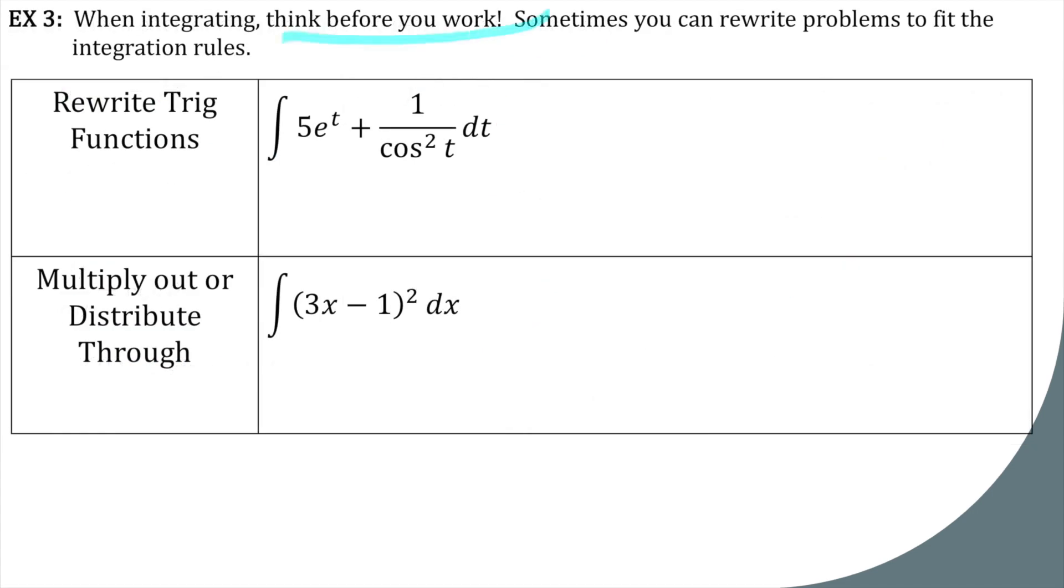When integrating, think before you work. Sometimes you can rewrite problems to fit the integration rules. So for example, this first one, what is 1 over cosine squared t? Well, that's secant squared. Now I can take the antiderivative of secant squared. Can you think of a function whose derivative is secant squared? Tangent. So 5e to the t plus tangent t, and of course, plus c.